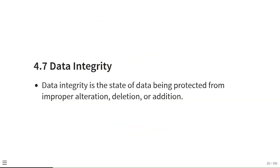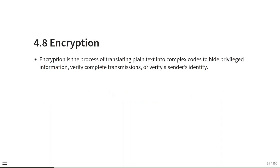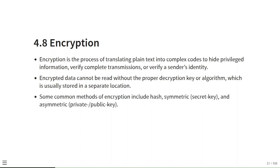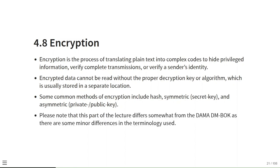Data integrity is the state of data being protected from improper alteration, deletion or addition. Encryption is the process of translating plain text into complex codes to hide privileged information, verify complete transmissions, or verify a sender's identity. Encrypted data cannot be read without the proper decryption key or algorithm, which is usually stored in a separate location. Common methods of encryption include hash, symmetric or secret key, and asymmetric or private-public key. Note that this part of the lecture differs somewhat from the DAMA-DMBOK source material due to minor differences in terminology.